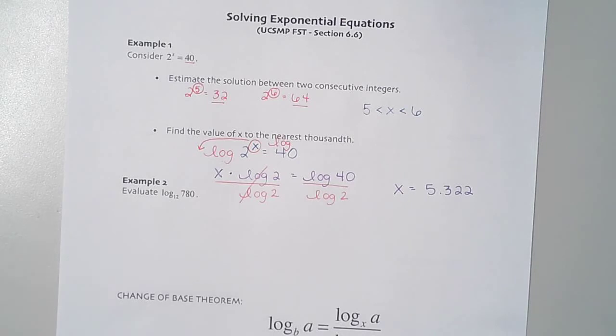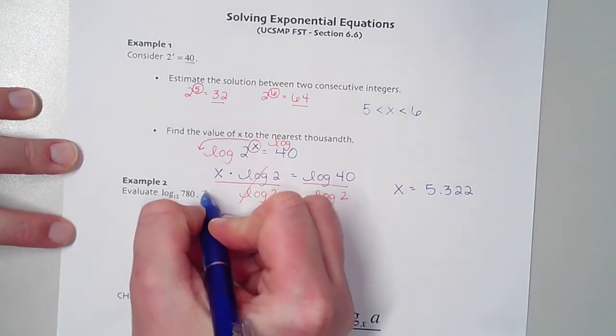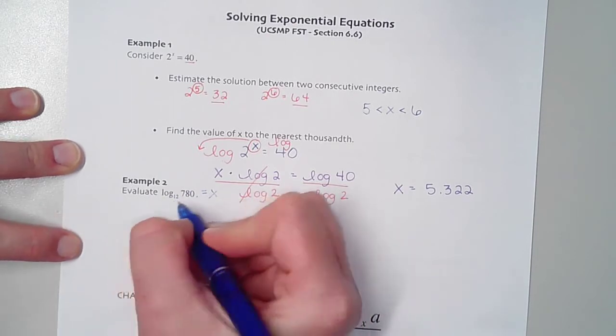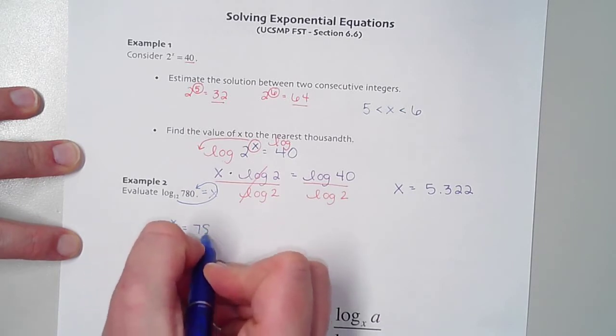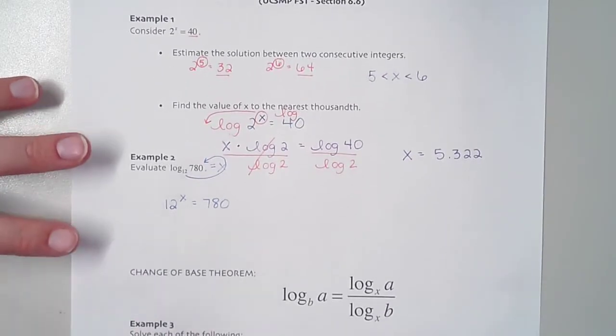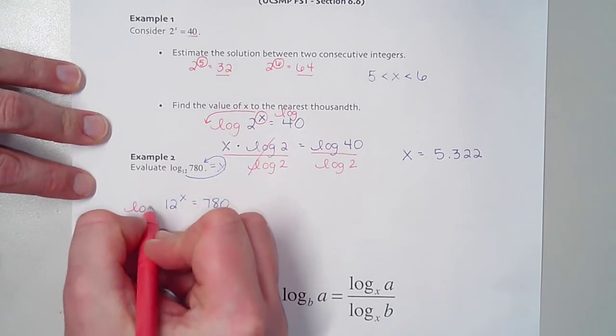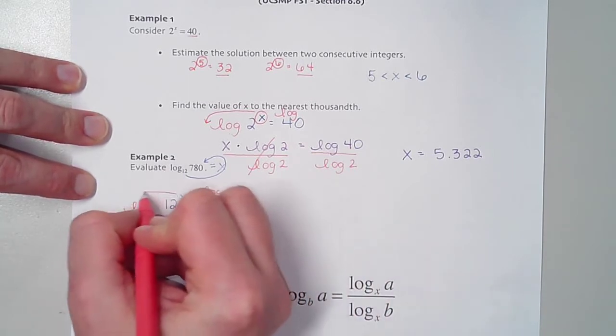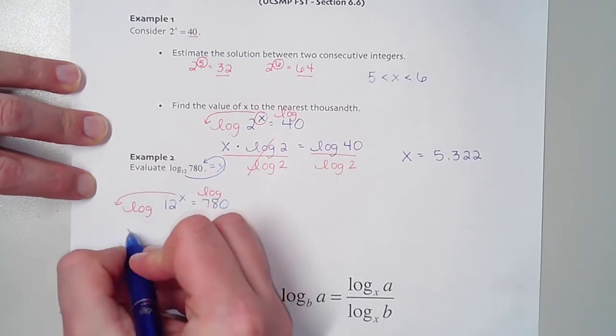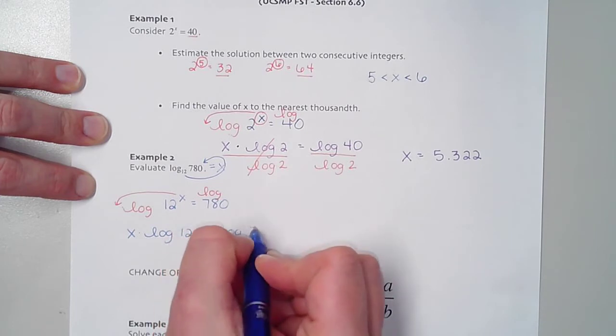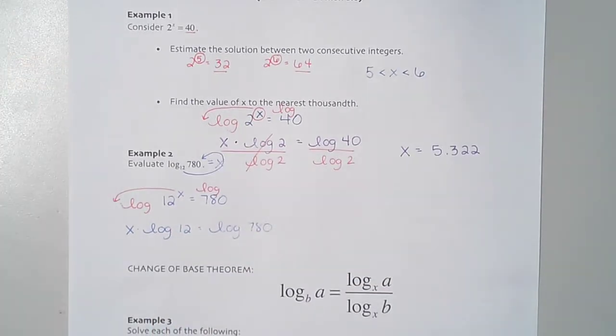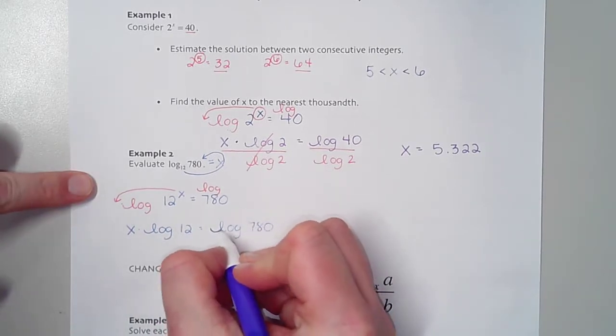So that right there is the process we can use to solve when there's an x up in the exponent. Every single time there is a variable in the exponent, you're going to take a log, preferably a common log, on each side to bring that exponent down. Let's look at this next question. It says evaluate log base 12 of 780. If we want to know what this equals, I'm going to set this equal to x and rewrite this as an exponential equation: 12 to the power of x equals 780.